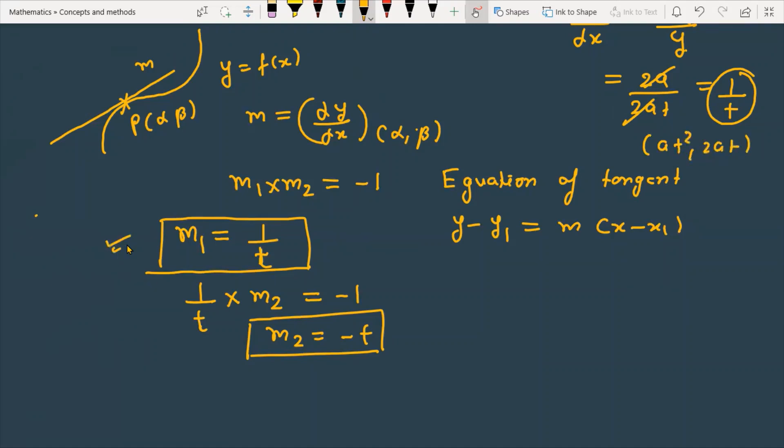Substituting and simplifying: y - 2at = (1/t)(x - at²). Multiplying by t: ty - 2at² = x - at². Rearranging the terms: x - ty = x - 2at² + at².